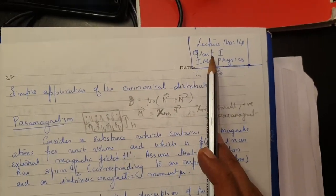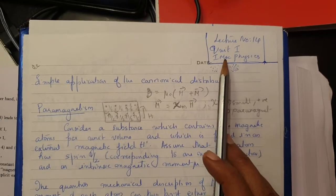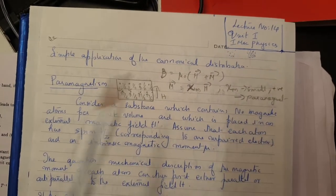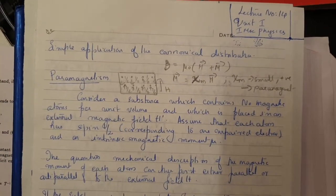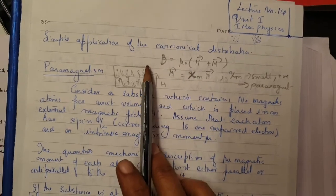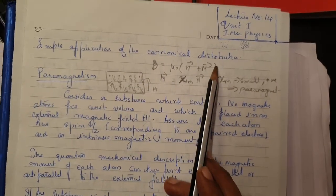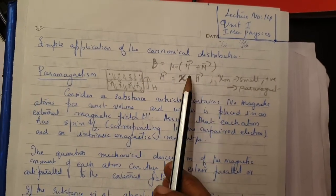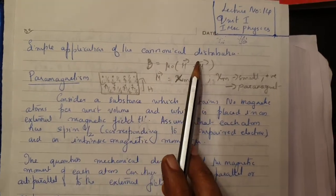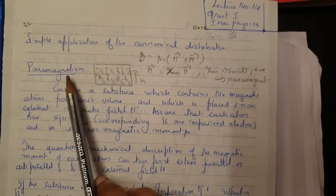Hello everyone. Today we are going to do lecture number 14 of Unit 1 according to your syllabus. We have to remember the last class that we did about canonical distribution. Now we are going to see some simple applications of canonical distribution. Today's example is paramagnetism.